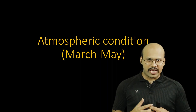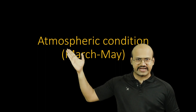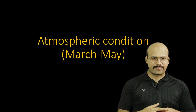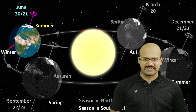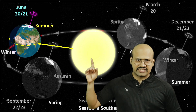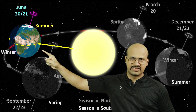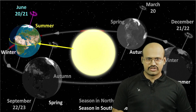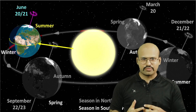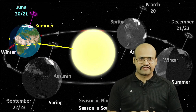In order to understand why pre-monsoon showers occur from March to May, we need to understand the atmospheric conditions over the Indian subcontinent during those months. During the summer season of the northern hemisphere, the sun is almost overhead of our Indian subcontinent. The sun rays are almost vertical and they heat the Indian subcontinent. Even in March to May, the sunlight is almost vertical, so these regions receive a lot of sunlight.